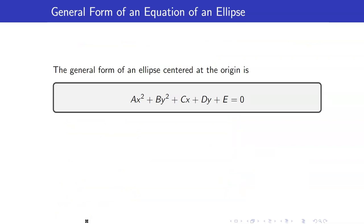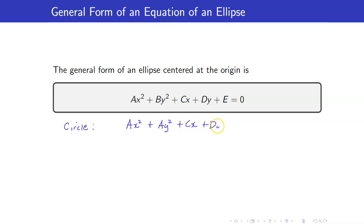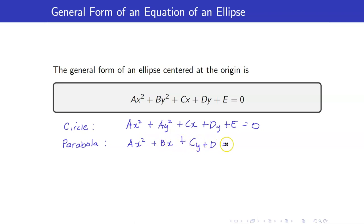Here is the general form of an ellipse centered at the origin, where one side equals zero. Comparing with other conic sections: for a circle, the equation is Ax² + Ay² + Cx + Dy + E = 0 — the coefficients of x² and y² are the same. For an ellipse, those coefficients are different. For a parabola, only one variable appears with exponent 2 — either x² or y².